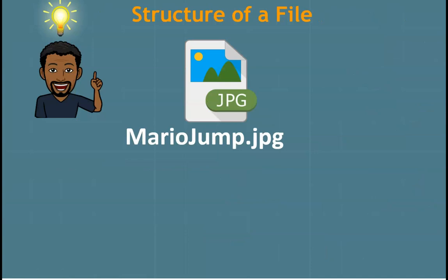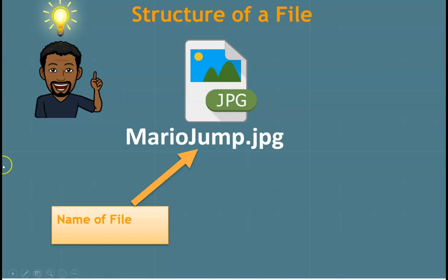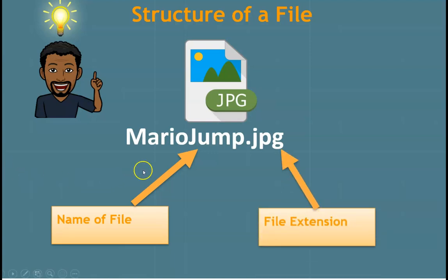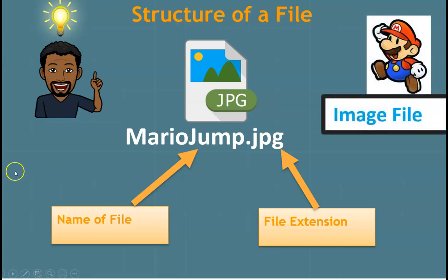As we look at the structure of a file, we're going to see that it is comprised of two different parts. The first part is the name, and the second part is what we call the file extension. The name is pretty self-explanatory — we are always naming files. The extension is typically made up of three letters, and preceding the letters is what we call a dot. In this particular example, we see marieljump.jpg. Any time we see the three-letter extension jpg, it's referring to a graphic or image file. The name should give a more clear indication of what kind of graphic file — here we have an image of Mario.